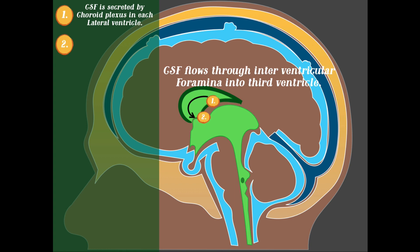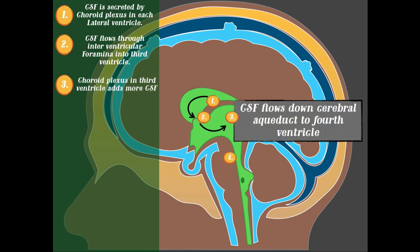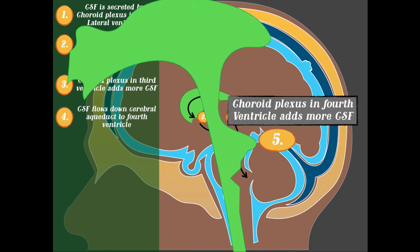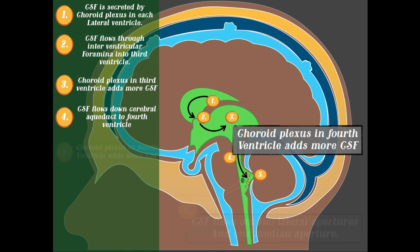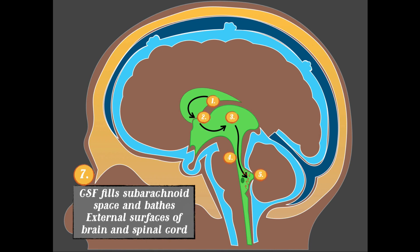As the lateral ventricles fill up, CSF drains through the interventricular foramen — a hole — into the third ventricle, where more CSF is made. It then drains through the cerebral aqueduct into the fourth ventricle, where more CSF is produced by the choroid plexus. From the fourth ventricle, CSF drains through two openings — a lateral aperture and a median aperture — into the subarachnoid space, flowing down to surround and cushion the spine, then around the cerebellum.